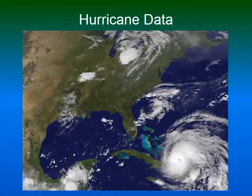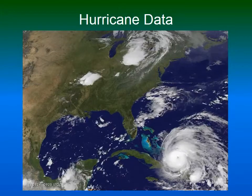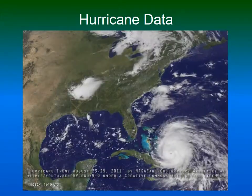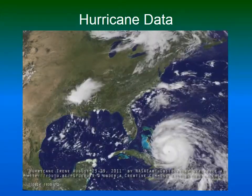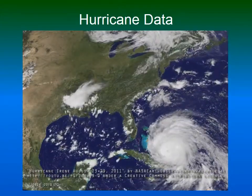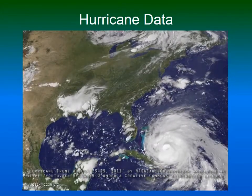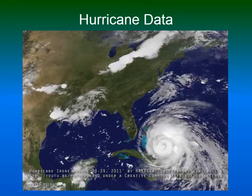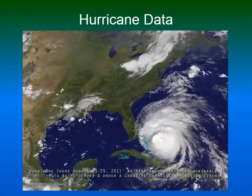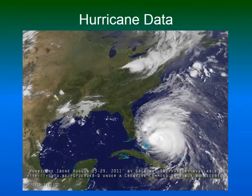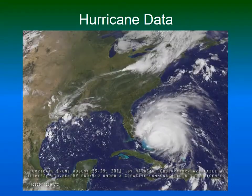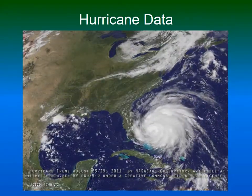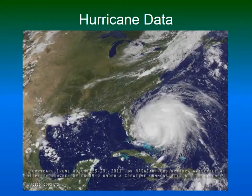We will demonstrate our approach at the example of hurricane data. For hurricanes, an important geographic context is whether they are moving over land or sea. Over the warm waters of the ocean, a hurricane moves faster and it slows down over land.